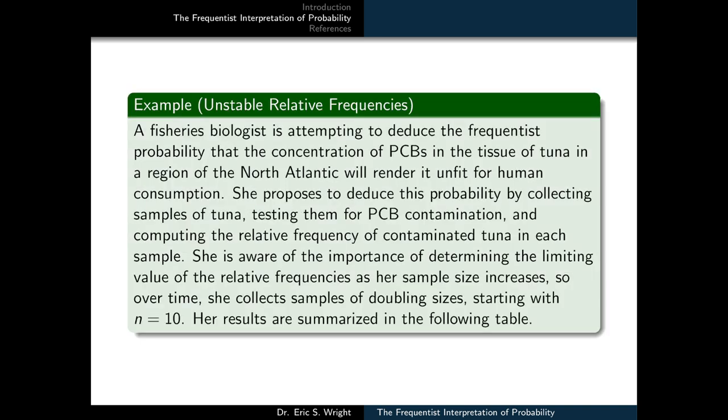A fisheries biologist is attempting to deduce the frequentist probability that a concentration of PCBs in the tissue of tuna in a region of the North Atlantic will render it unfit for human consumption. She proposes to deduce this probability by collecting samples of tuna, testing them for PCB contamination,